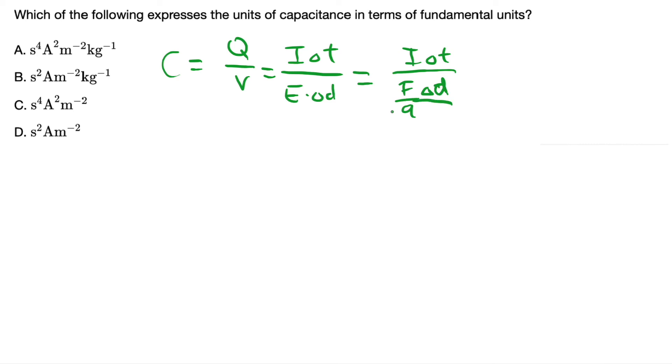So we know electric field is also equal to electric force divided by the test charge. So now we can know the fundamental units of capacitance. So current has a fundamental unit of ampere. Time has a fundamental unit of second. Force has a fundamental unit of Newton, which is equal to kilogram times meter per second squared. And then distance has a fundamental unit of meter as well. Over charge, so charge is equal to current times time, which is equal to ampere times second.